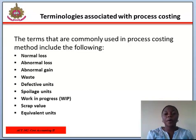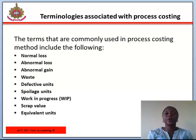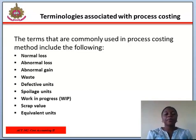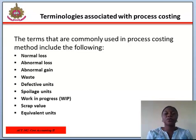Let's take these one by one. Normal loss is the term used to describe normal expected wastage under usual operating conditions, and this may be due to reasons such as evaporation, testing, or rejects. Abnormal loss is when a loss occurs over and above the normal expected loss. This may be due to reasons such as faulty machinery or errors by laborers.